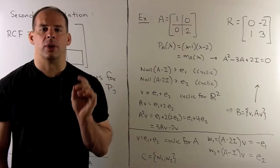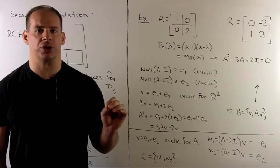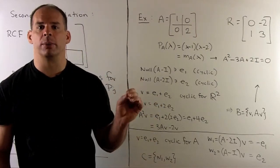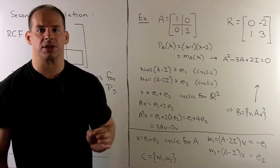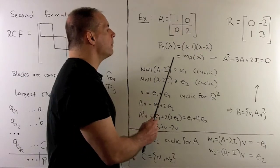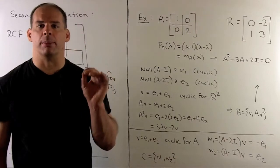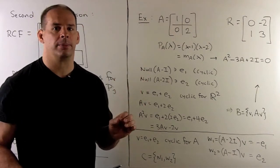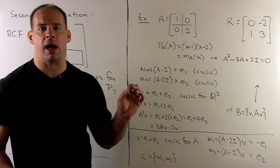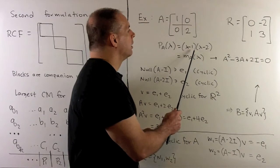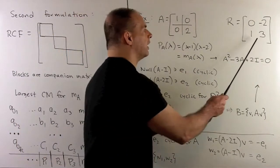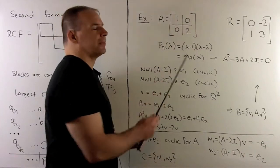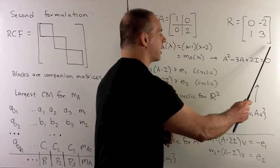Our base case: a two by two diagonal matrix with distinct diagonal entries. I'll choose A equal to diag(1, 2). This is in rational canonical form in the first formulation — our companion matrices are just one by one blocks. The characteristic polynomial is (λ−1)(λ−2), which equals the minimal polynomial. So in the second formulation, we have a single two by two block. The coefficients in the second column come from the minimal polynomial λ²−3λ+2, giving entries 3 and −2.